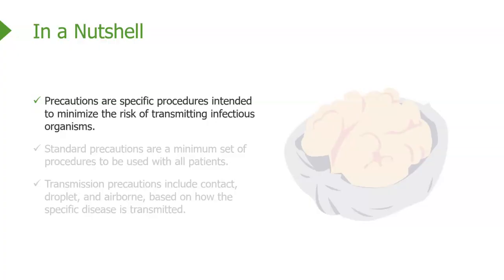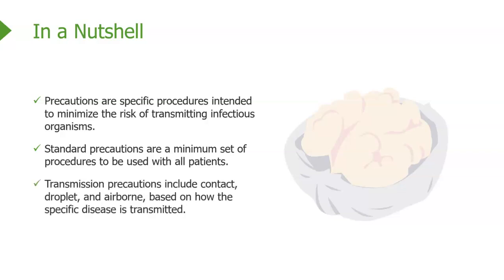Let's wrap up. Precautions are specific procedures intended to minimize the risk of transmitting infectious organisms. Standard precautions are a minimum set of procedures to be used with all patients. Transmission precautions include contact, droplet, and airborne specific recommendations, and these are based on how the specific disease is transmitted. Thanks for watching this video.